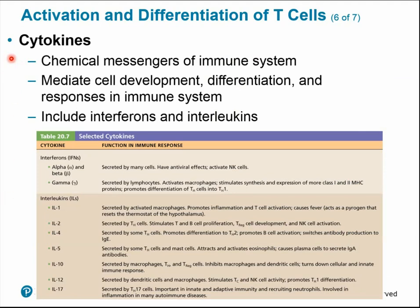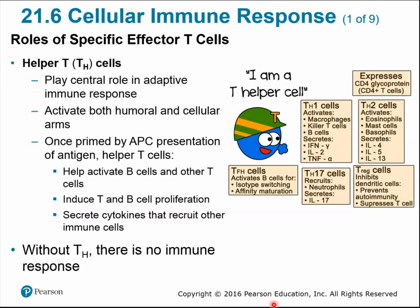Cytokines are chemical messengers of the immune system that mediate processes like cell development, differentiation, and immune responses. The primary cytokines include interferons, which interfere with viral reproduction — antiviral chemicals — and interleukins, a large group of chemical messengers that help mediate other immune functions, such as activating macrophages, stimulating lymphocyte proliferation and differentiation, and causing some cells to secrete antibodies.